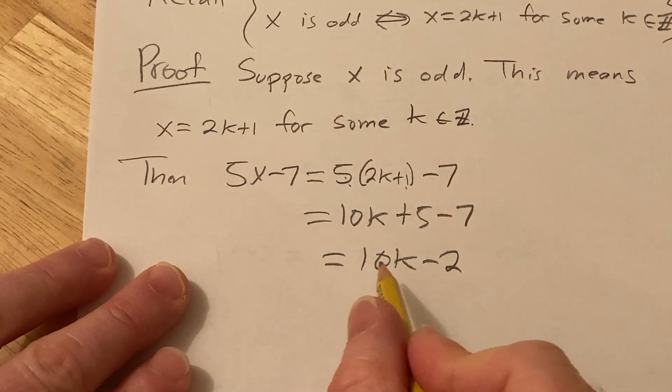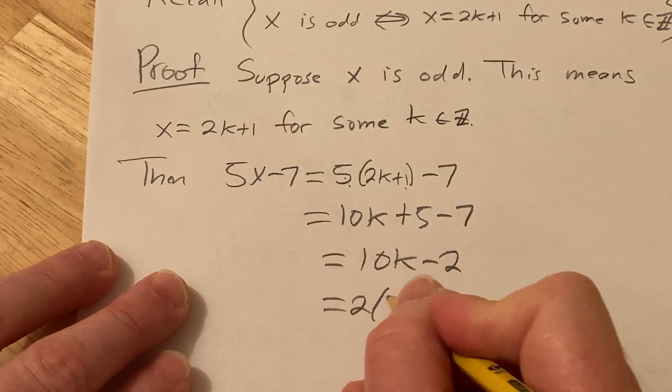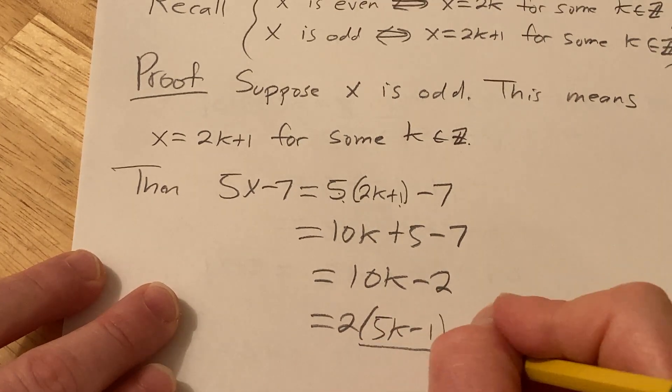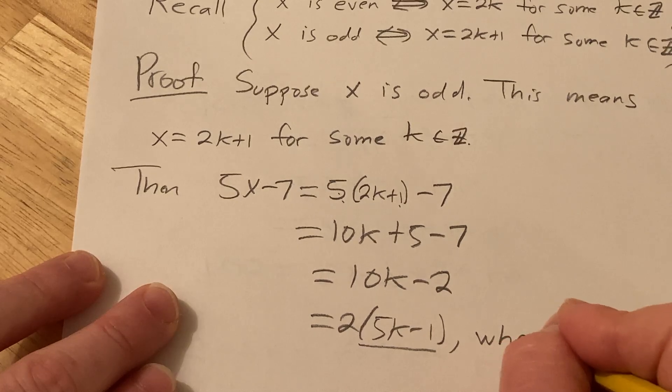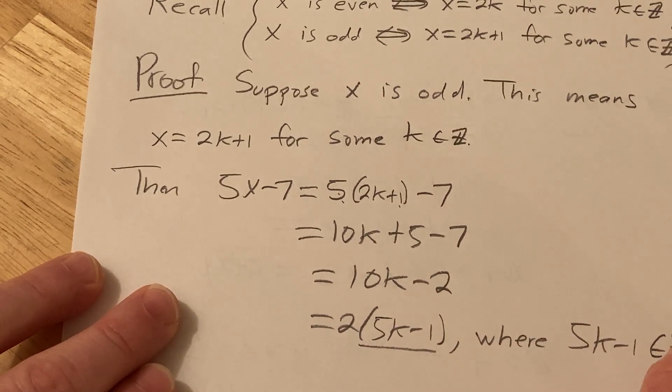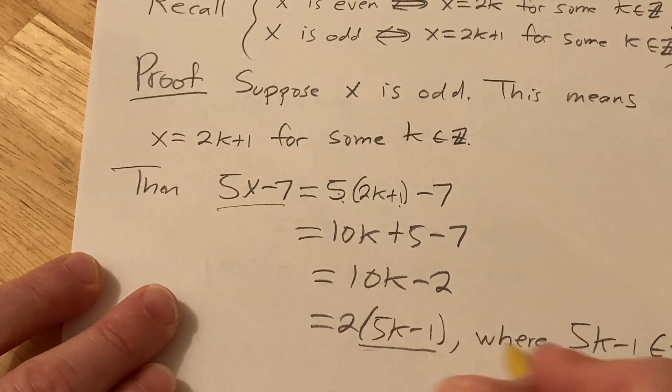And we're trying to show it's even, so we're trying to show it's a multiple of 2. So we can pull out a 2 now. So we get 2 times 5k minus 1. So this is an integer, so we should say that. So where 5k minus 1 is an integer. Because it's a product and difference of integers, so it's an integer. So we showed that 5x minus 7 is even. This completes the proof.